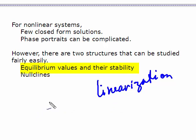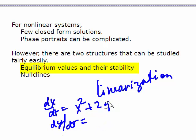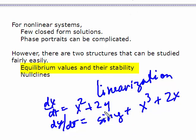Linearization is more than just lopping off the nonlinear terms. For example, if you have dx/dt equals x² + 2y and dy/dt equals sin(y) + x³, you don't linearize by just cutting these off — you'd put a linear term like 2x here. There's another technique. We're going to be using the Jacobian to do this.